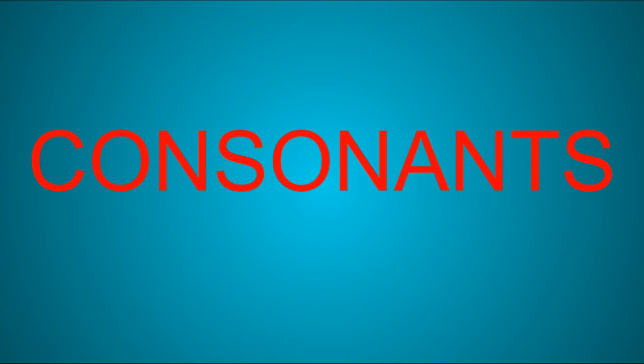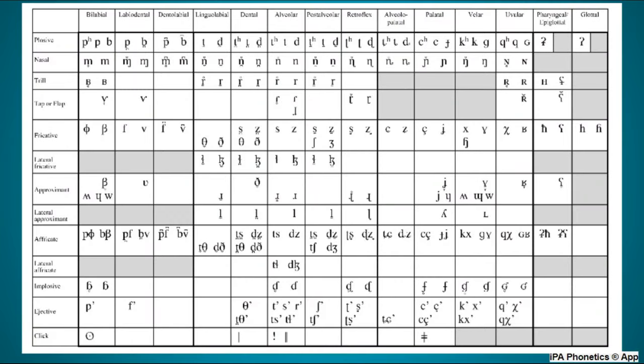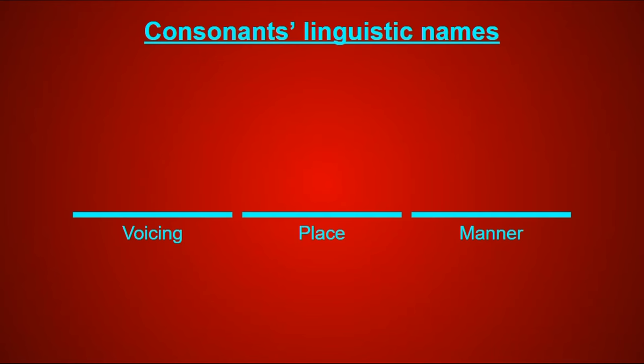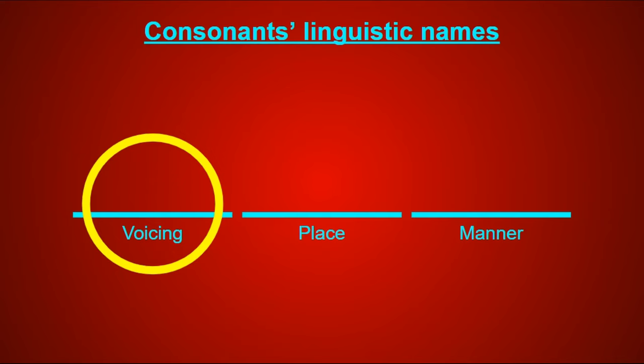Now I've arrived at the consonant chart, which is a bit more complicated than that of the vowels, but consonant names also have three parts. I'll start by explaining the first part, which corresponds to whether a consonant is in the left or right of its box — this is the voicing. The first word of a consonant's name will be either voiceless on the left or voiced on the right, referring to whether your vocal cords are vibrating during the consonant or not.